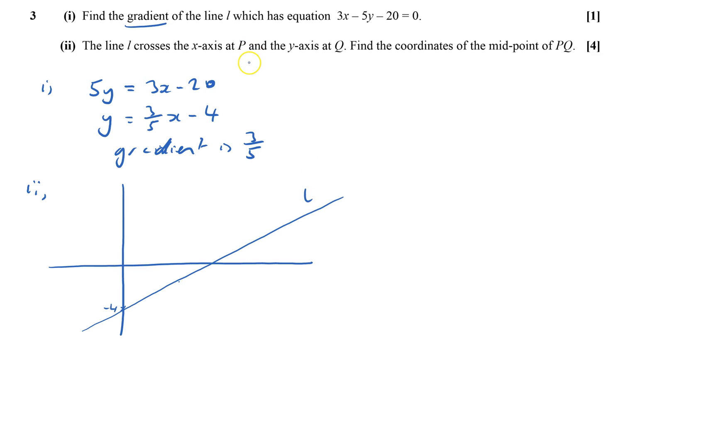It crosses the x-axis at P. So that's the x-axis. So that's P. And the y-axis at Q. That's minus 4. Find the coordinates of the midpoint of PQ, which is exactly here.